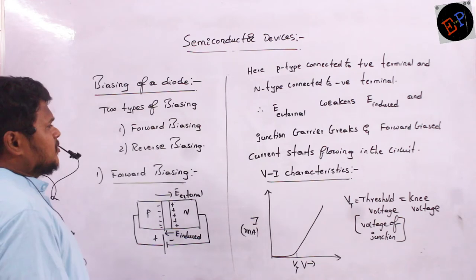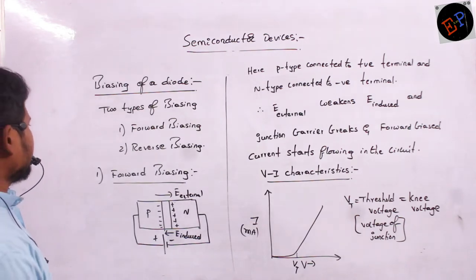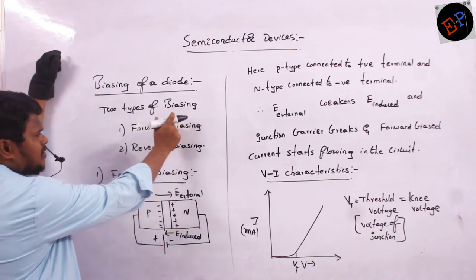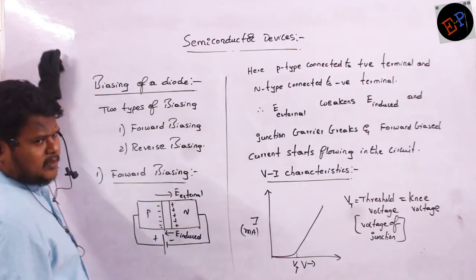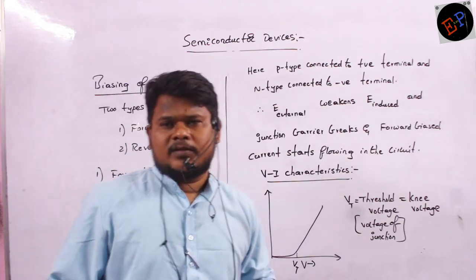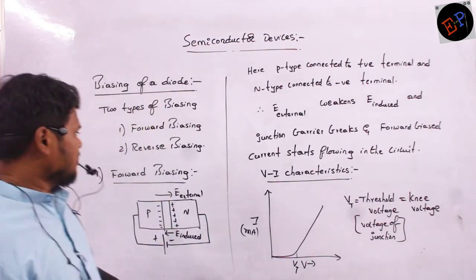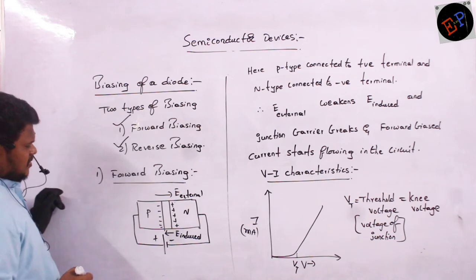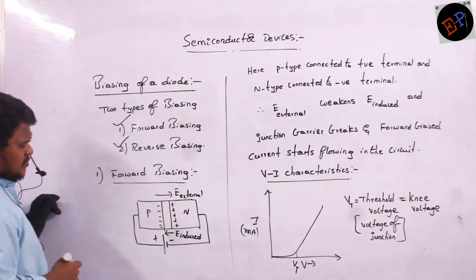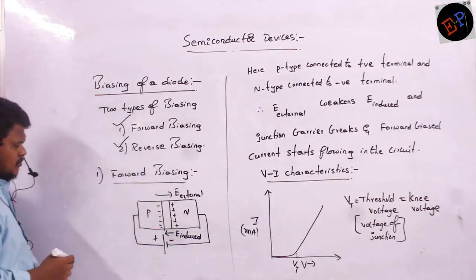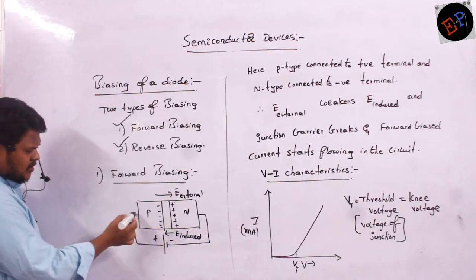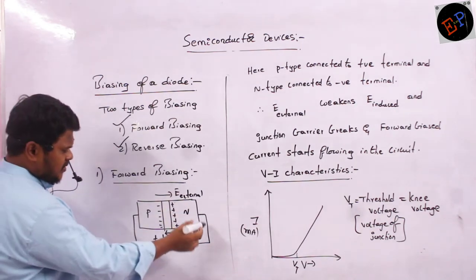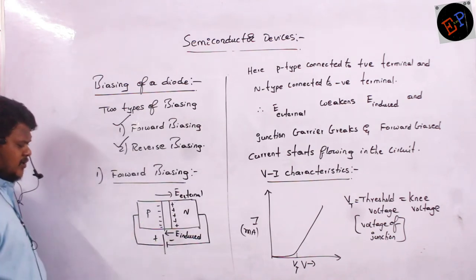Now we are studying about biasing of a diode. There are two types of biasing. Biasing means connecting a battery. Two methods of biasing: one is forward biasing, the second is reverse biasing. In forward biasing, the positive side is connected to the positive terminal of the battery, and the N-type semiconductor is connected to the negative side of the battery.